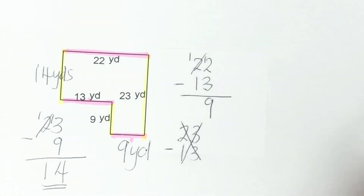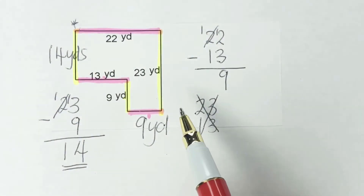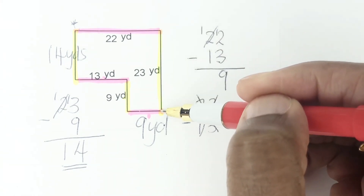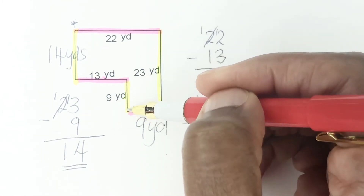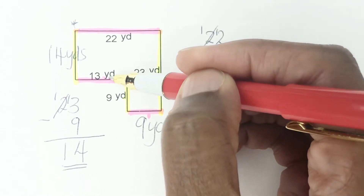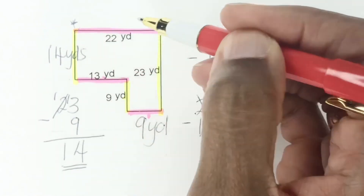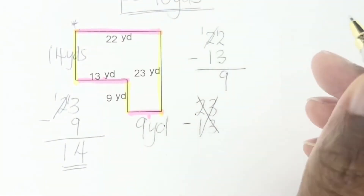Now let's go down to this second shape, starting from one corner. 22 plus 23 is 45, plus 9 is 54, plus 9 is 63, plus 13 is 76, plus 14 takes us to 90 yards. So subtract what you know to get what you don't know — once you've found those missing sides, just add all the way around and you will find the perimeter of an irregular shape.